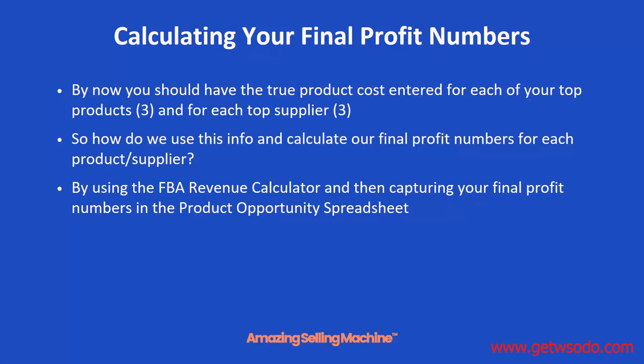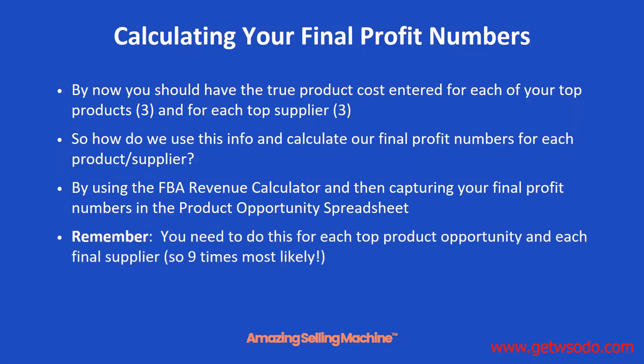It's by using the FBA revenue calculator and then capturing that final profit number in the product opportunity spreadsheet. Remember, you need to do this for each top product opportunity and for each supplier, so you need to do this at least nine times — maybe more if you've captured more products or more suppliers. Let's go over to our product opportunity spreadsheet and then our FBA revenue calculator tool to review one more time how this is done.